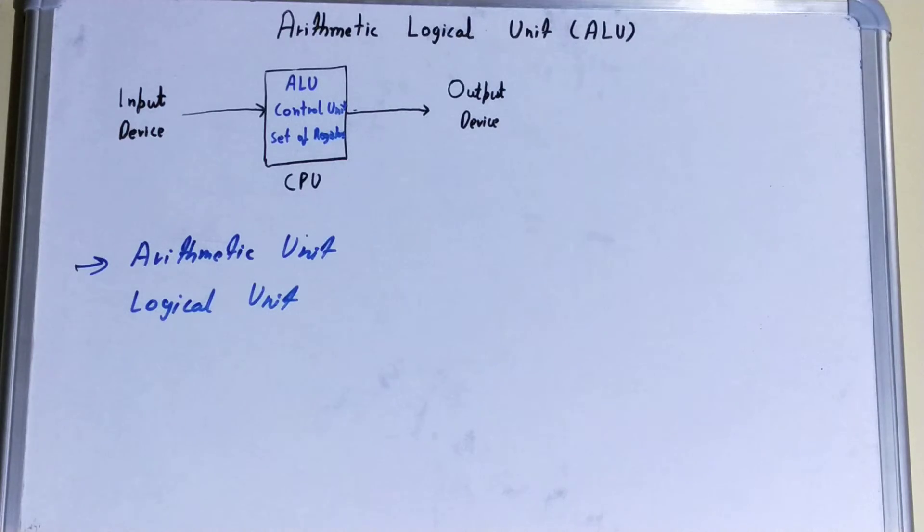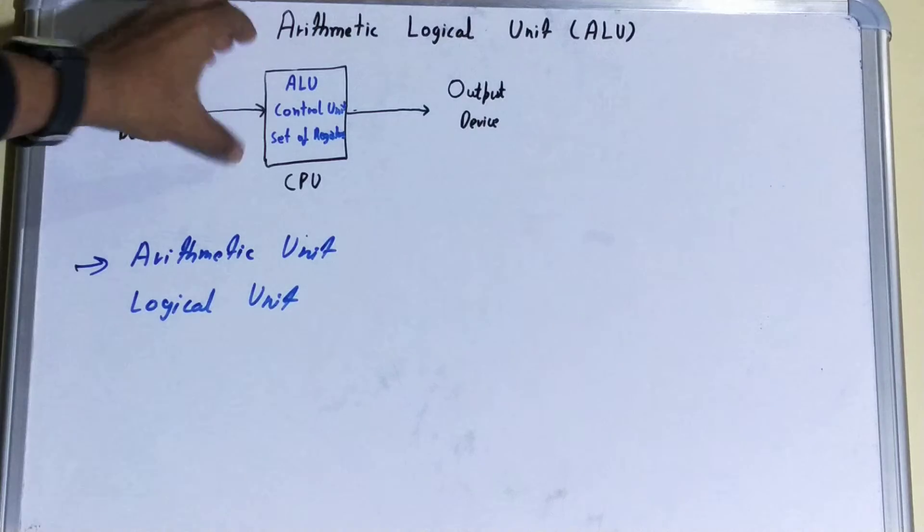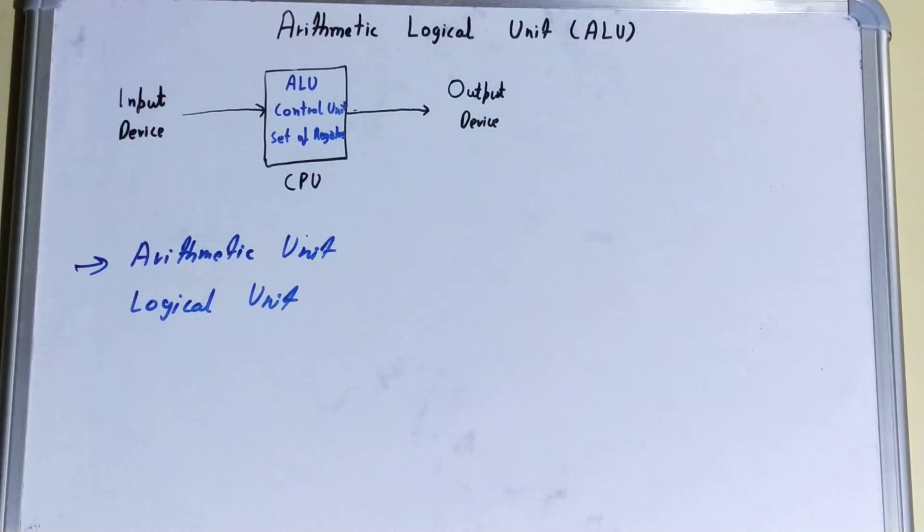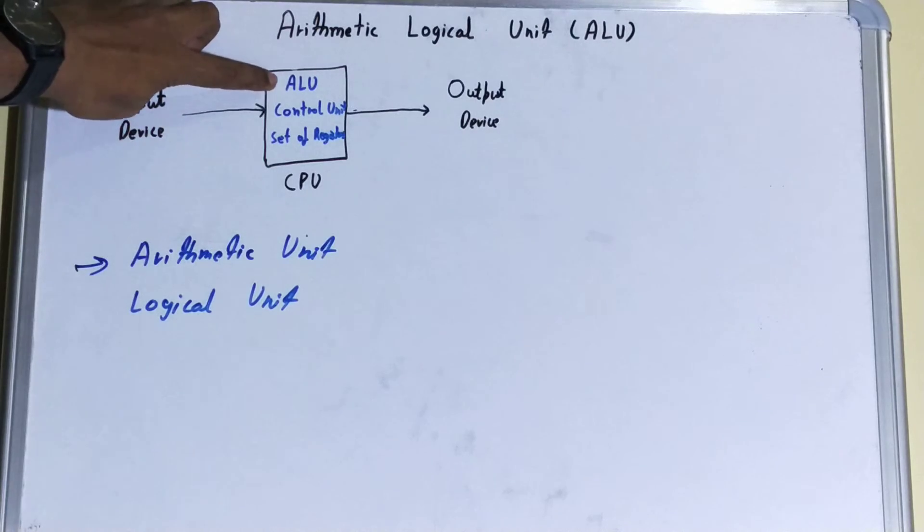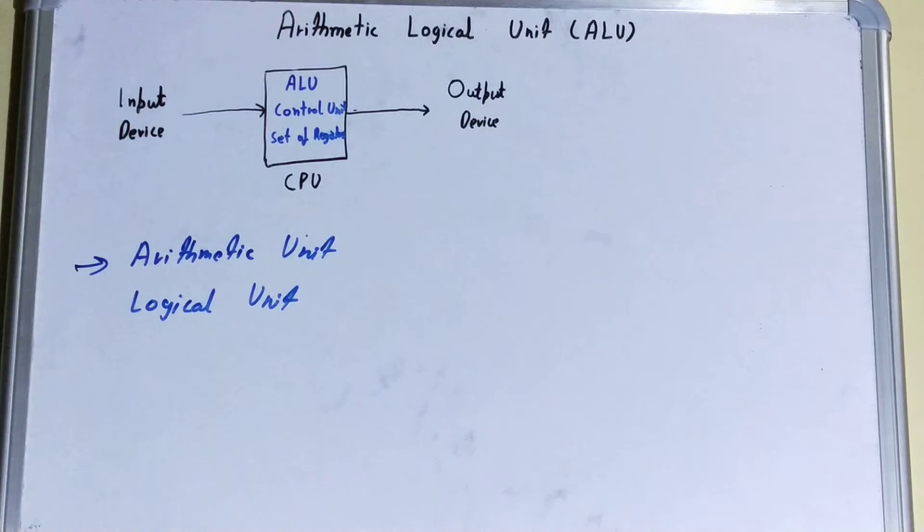From here you can see that some data is passed, then that data is analyzed, and it goes into the CPU. The CPU has three things: your ALU, Control Unit, and Set of Registers. The register's work is just for holding values.